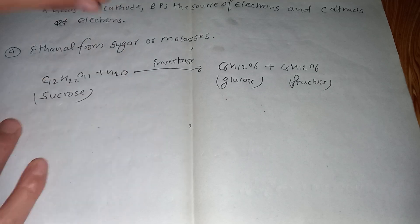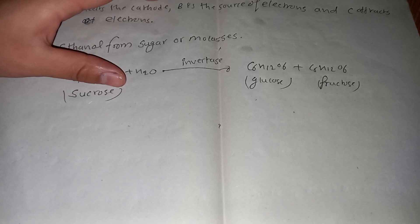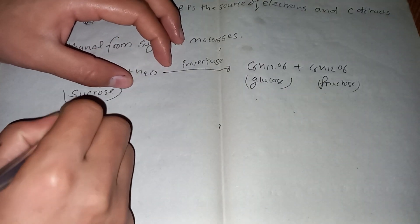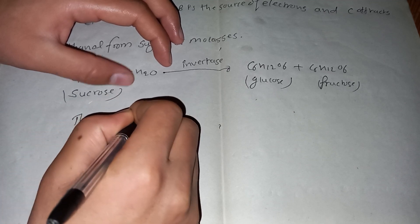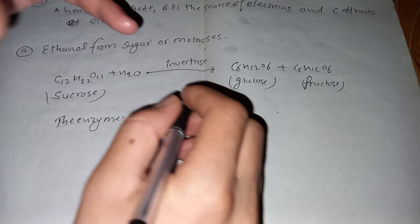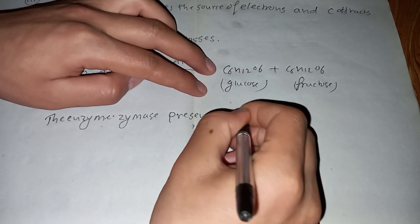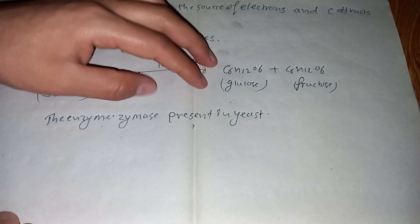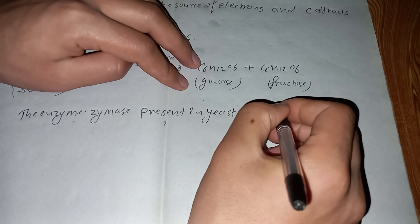The enzyme zymase present in yeast converts glucose and fructose to ethanol.